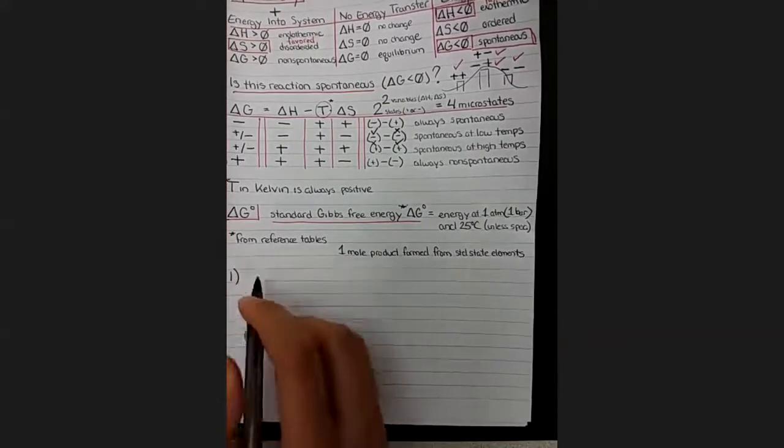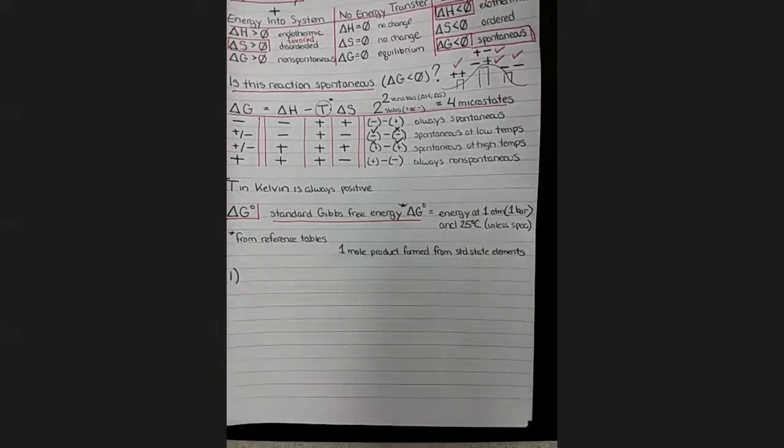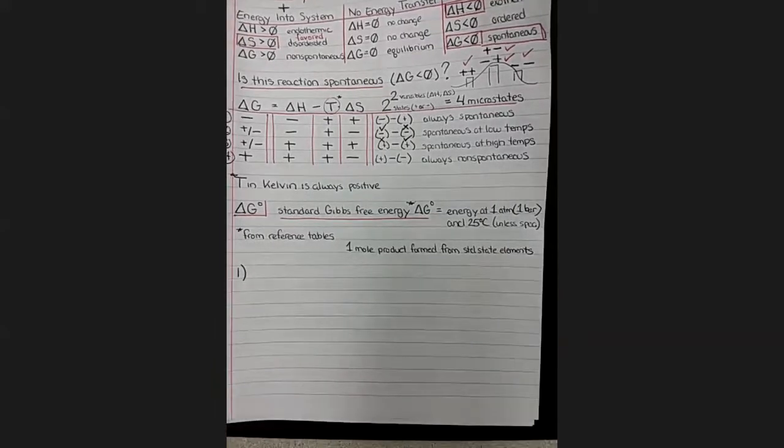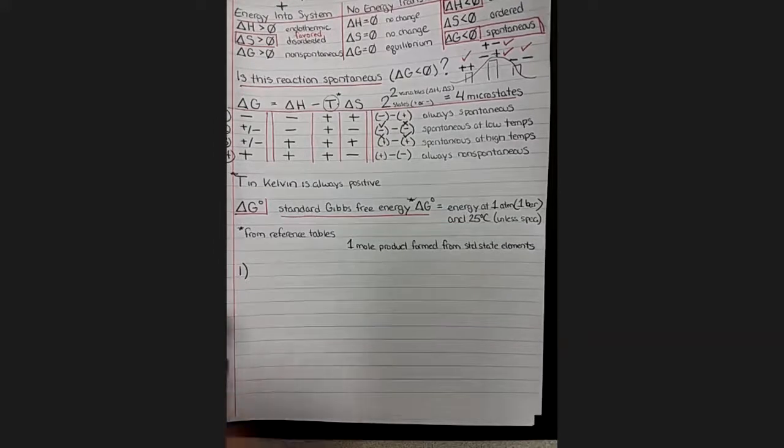And now if we want to solve for the standard delta G, there are three ways we can do so, several of which we have seen before.